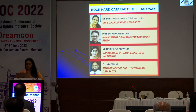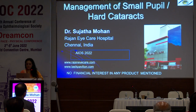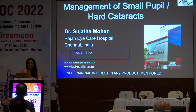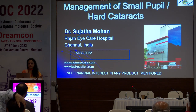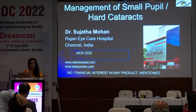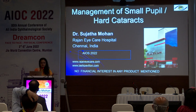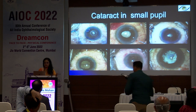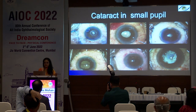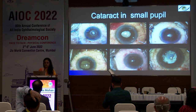My topic is on small pupil and hard cataract. Nowadays in the post-COVID scenario, almost all of us are seeing quite a lot of hard cataracts — something we never used to see before. Initially when we started FACO, we used to see a lot of hard cataracts, but then it came down to about 10% of our practice. Now it's a reversal. We see quite a lot of hard cataracts, and small non-dilating pupils have become a very common scenario post-COVID.